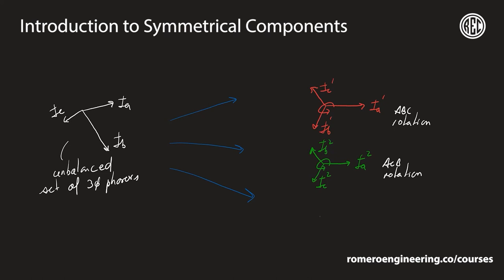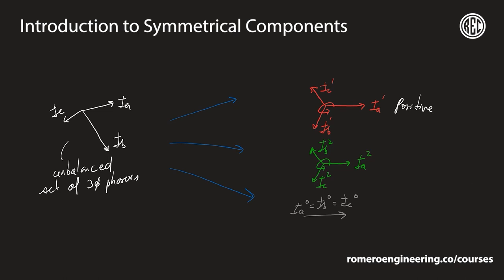The zero sequence set is a set where all three phases have the same magnitude and the same phase angle — so IA zero equals IB zero equals IC zero. To summarize the three decomposed sets: the positive sequence, the negative sequence, and the zero sequence.